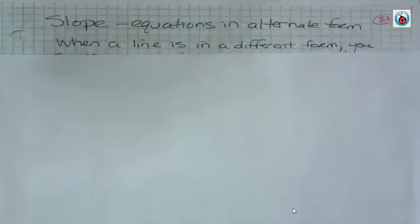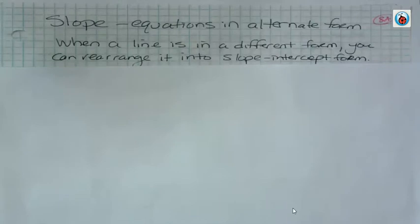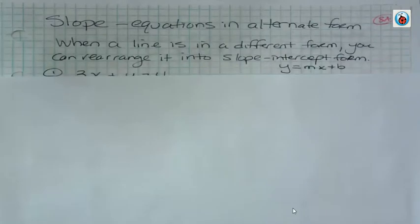When a line is in a different form, you can rearrange it into slope-intercept form. Remember, slope-intercept form is y equals mx plus b. So let's say we have this line, 3x plus y equals 4.